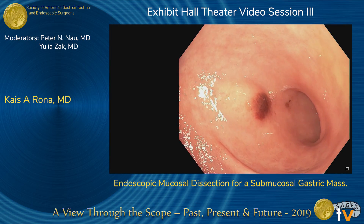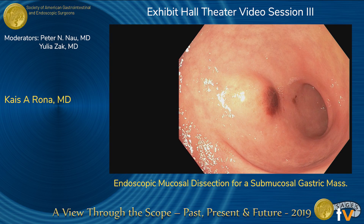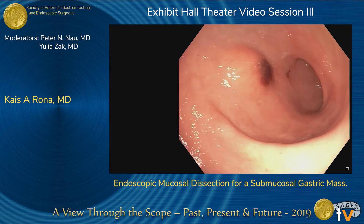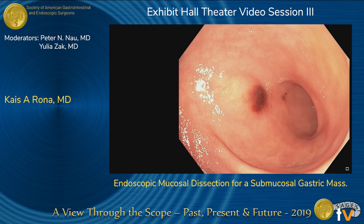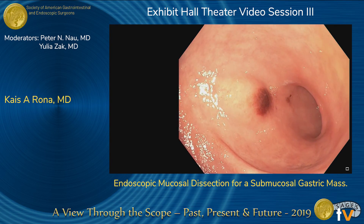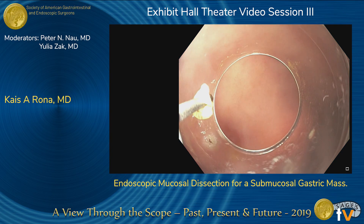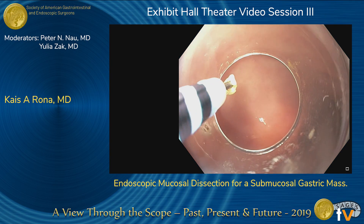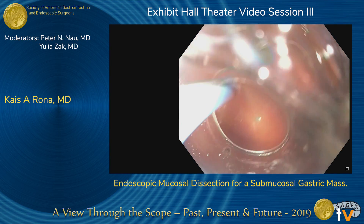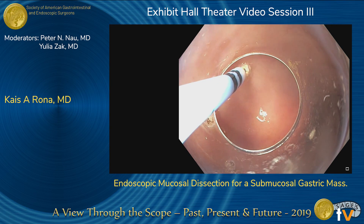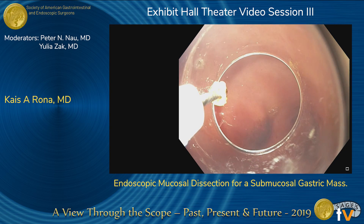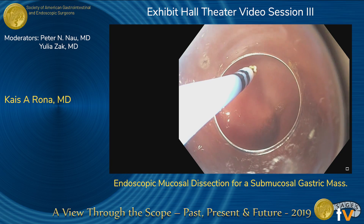Here you can appreciate the mass lesion in the distal stomach — that discoloration is iatrogenic — and you can see that the overlying mucosa is pretty much intact. For the procedure, we use a standard high-definition gastroscope with a cap attached to the end of the scope, and we have about a 2.8-millimeter working channel. Here we're using the hybrid electrosurgical knife to mark the perimeter of the lesion.